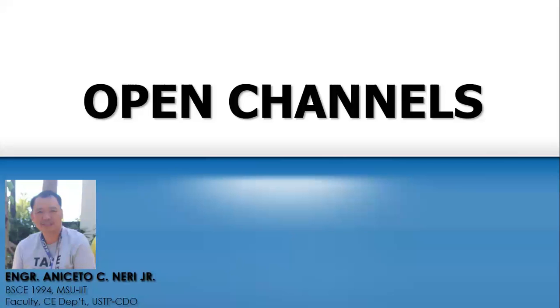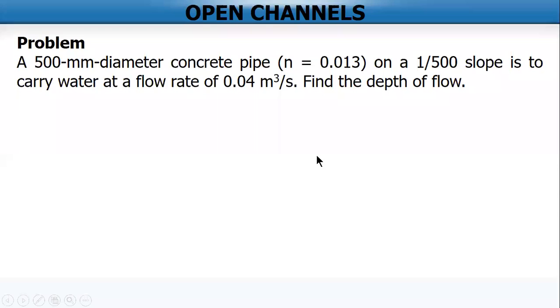Okay, I'm going to solve a problem about open channels. This is just a sample problem about the topic. Here's the problem: A 500 millimeter diameter concrete pipe with given roughness coefficient of 0.013 on a 1 over 500 slope is to carry water at the flow rate of 0.04 cubic meters per second. Find the depth of flow.